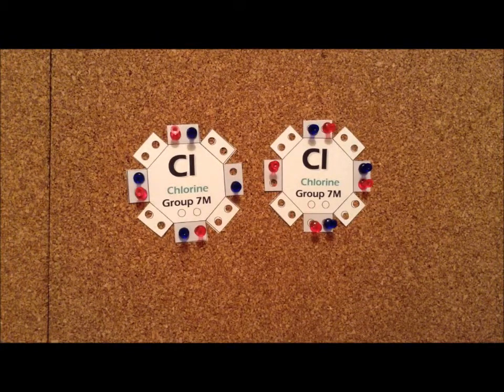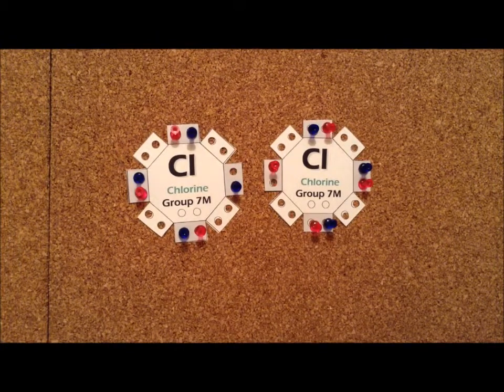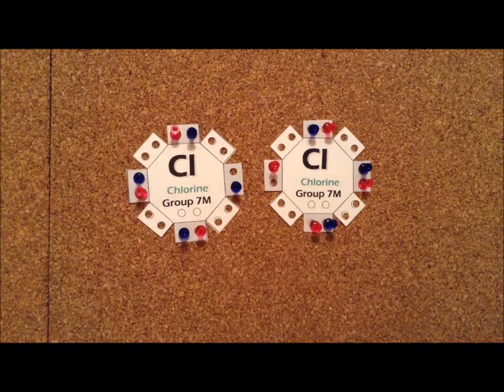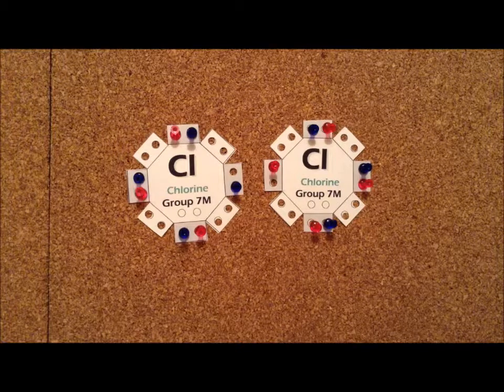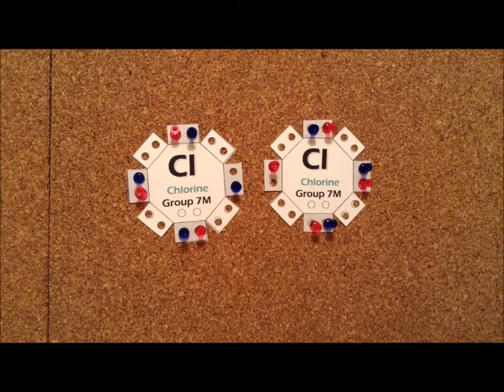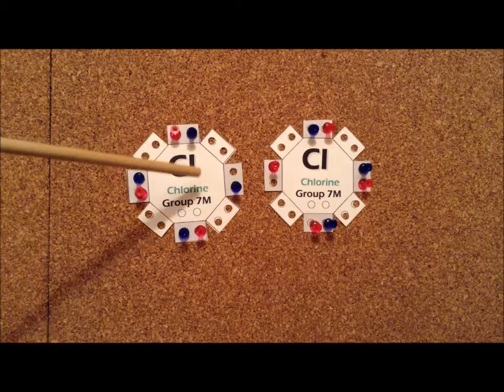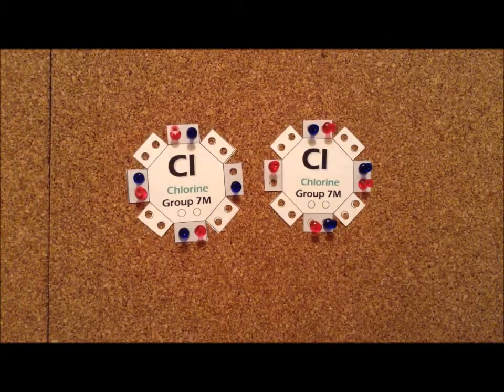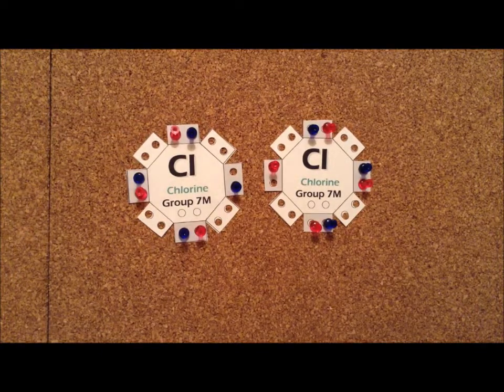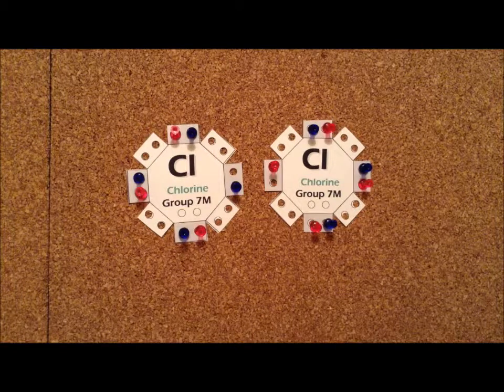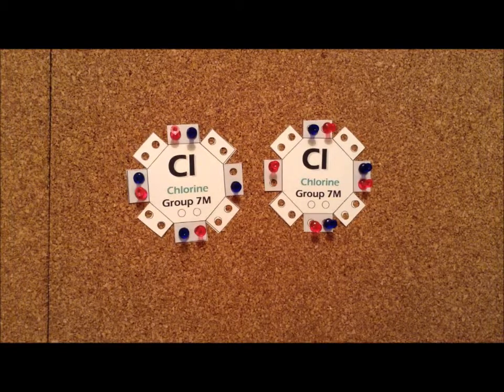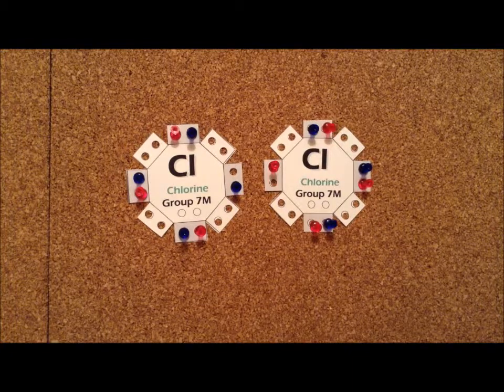Whenever we have an odd number of electrons, we have a free radical. So here we see an example of an atom of chlorine existing as a free radical. Since we've already seen that free radicals are particularly reactive, we might imagine that individual chlorine atoms are going to be very reactive. They tend to react with organic molecules by a free radical mechanism. That is almost invariably how chlorine is going to react if we start with Cl2.